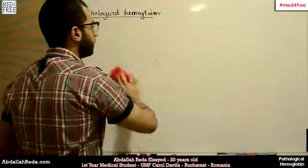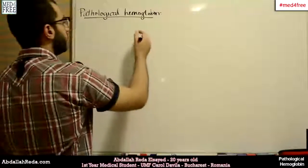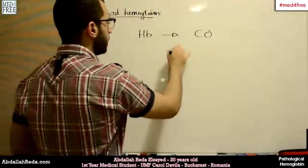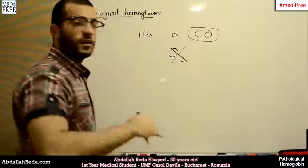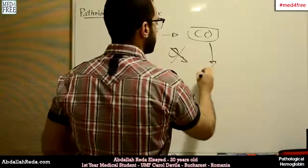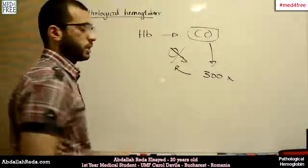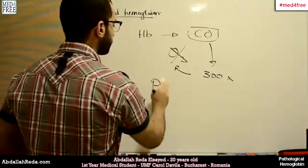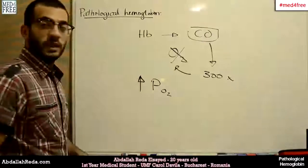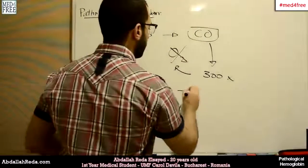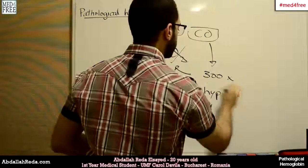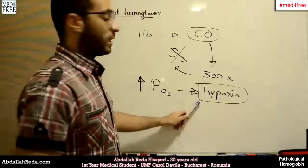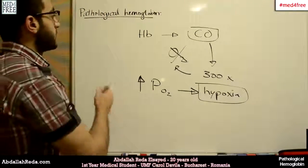Another type is hemoglobin that binds carbon monoxide. Instead of binding oxygen, it binds carbon monoxide with a very high affinity — 300 times higher than oxygen. So it binds carbon monoxide and leaves oxygen dissolved in the blood, causing the oxygen pressure to be higher. This causes something called hypoxia; the higher the pressure of oxygen, the greater the tendency for hypoxia to occur.